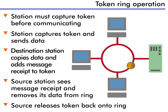The data itself continues to circle the ring. In addition to copying the data, the destination station also adds information onto the last part of the original packet. This information is used to tell the sending station the message was received — it's an acknowledgment of the message.